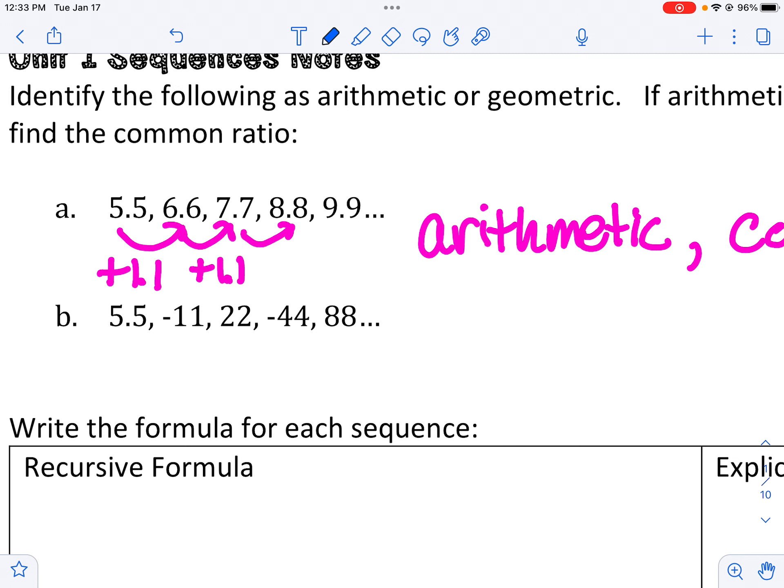And B, you can see it goes from positive to negative, positive to negative. So that's kind of a clue that it's going to be geometric because you can't add a number and get positive and negative like that. So to find the common ratio, you just take any number. So I'll just pick 22 and divide by the number before it. And we get negative 2.